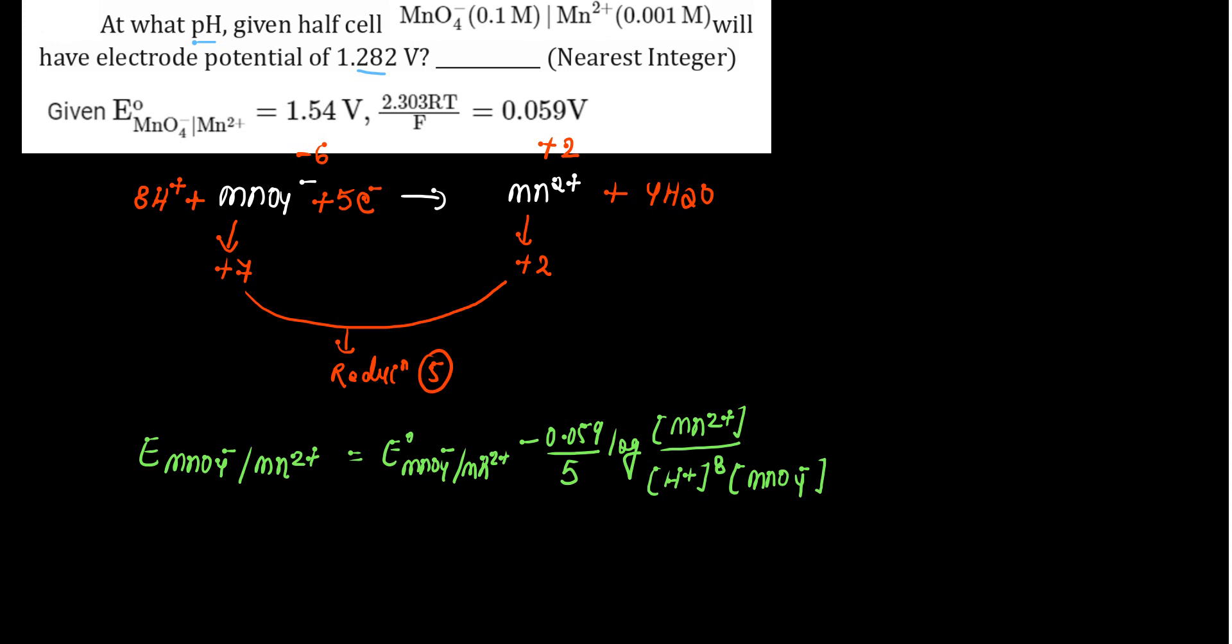So E of MnO4 minus upon Mn2 plus is given as 1.282 volt. This is equal to E naught of MnO4 minus upon Mn2 plus. E naught dei rakha hai 1.54 volt, isse put kar diya. Minus 0.059 upon 5 log. Mn2 plus is 0.001. H plus ke baare mein hai, humare pas koi information nahi hai, pH find karna hai. And MnO4 minus is given as 0.1.